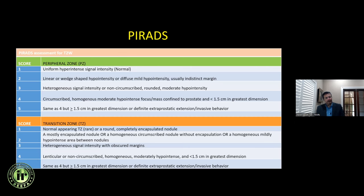In the transition zone, scoring is a little different due to BPH changes — nodules may score 2 or 3 depending on appearance. If a lesion is non-circumscribed, homogeneous, with moderate-high signal less than 1.5 cm, TZ lesions can be classified as PI-RADS 4. Lenticular-shaped lesions along the surgical capsule also qualify as PI-RADS 4 on T2-weighted sequences in the TZ. This is a key thing to remember when scoring on a sequence-based level.